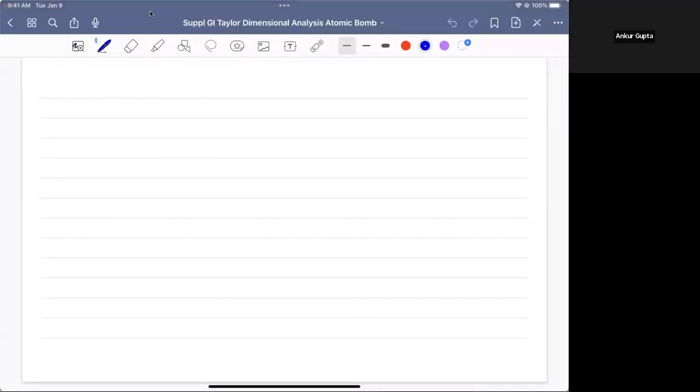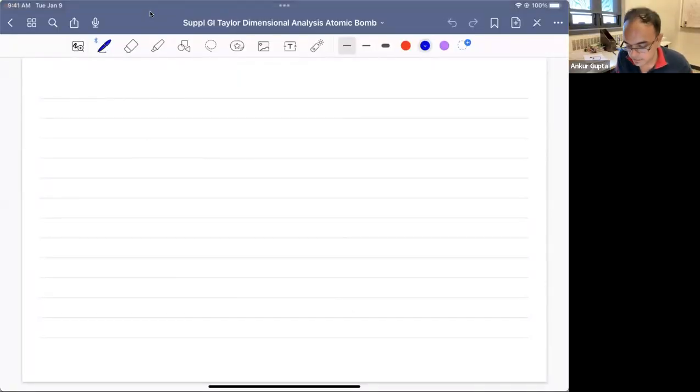Hi everyone, welcome to this video. In this video, we will be discussing an example of dimensional analysis, which will basically be the famous analysis by G.I. Taylor on dimensional analysis of atomic bomb and how much energy is released in atomic bomb.